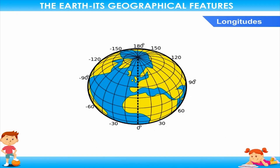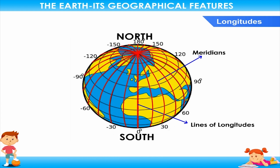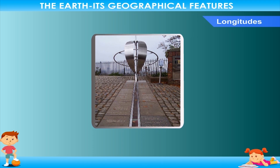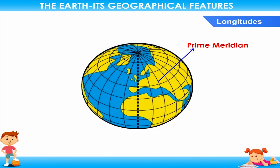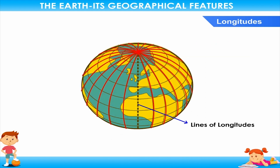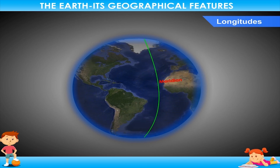Longitudes. The lines that run from north to south on the globe are called lines of longitudes or meridians. The longitudes are of equal length, unlike latitudes, and are 360 degrees in number. This made it difficult to number them. Thus, the meridian passing through Greenwich, near London, is taken as the 0 meridian, also called the prime meridian. Meridian means midday, and therefore a meridian of longitude joins places that have midday at the same time. The longitudes do not run parallel to each other; the two longitudes meet at two ends, and they are far apart at the equator with the gap decreasing as we move towards the poles.